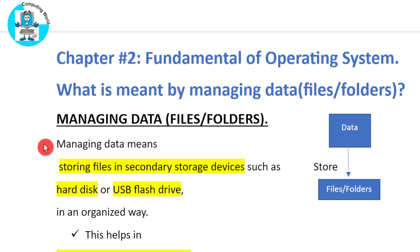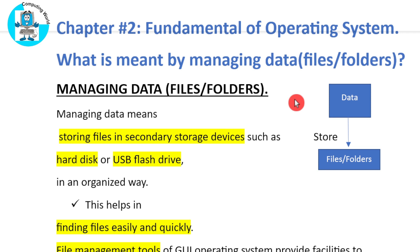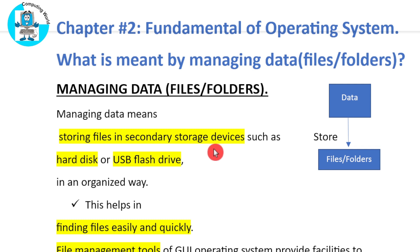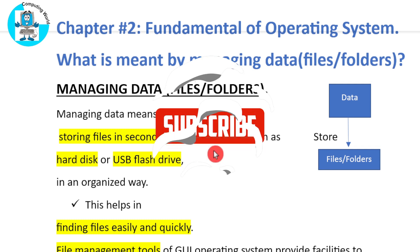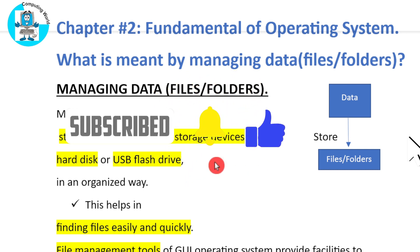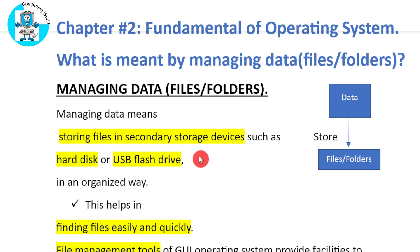When we save data, we can save it in the form of files and folders, which can be stored in an organized way in secondary storage devices such as a hard disk or USB flash drive. Data files and folders can also be stored in cloud services like Gmail.